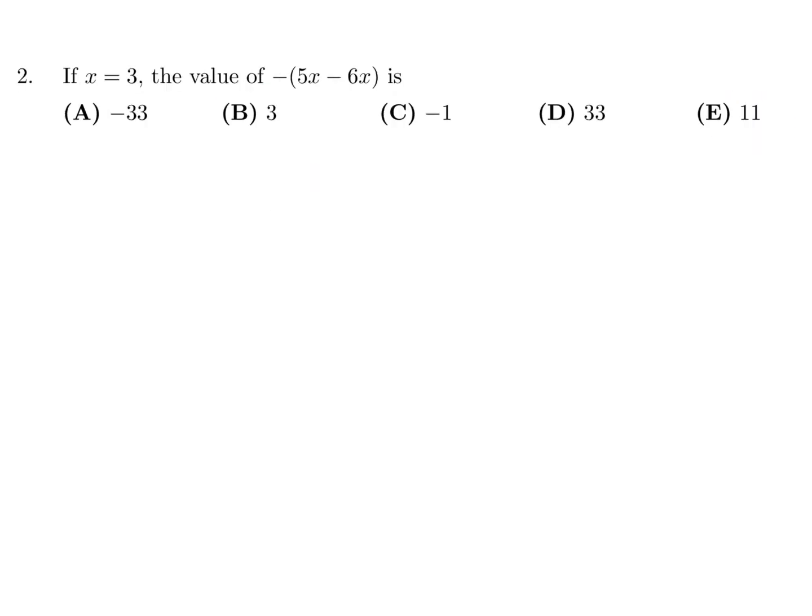If X is equal to 3, the value of minus 5X minus 6X minus 5X minus 6X is negative X. So negative negative X is just X, and X is equal to 3. So the answer is B.